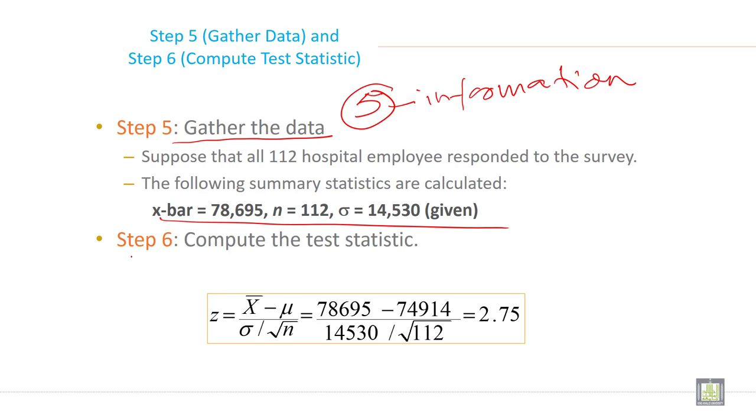Step 6 is compute the test statistic. So just put all the values into the Z formula. When you calculate, the Z calculated is 2.75.